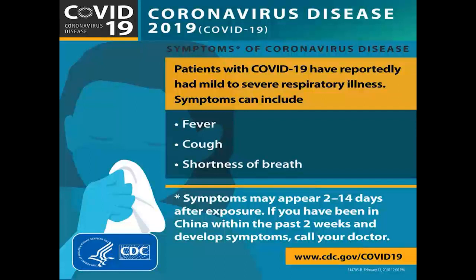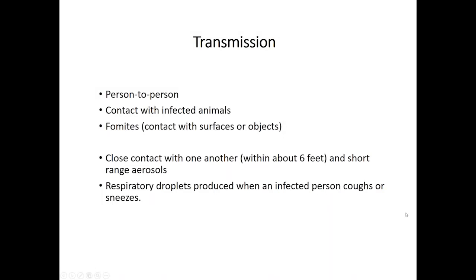The incubation period is generally 2–14 days, though some individuals have presented with symptoms outside that range. It is transmitted three ways: person to person through direct contact; contact with infected animals — which we don't really see in this country; and contact with fomites, which you see a lot in healthcare — contaminated surfaces, objects, or equipment. Person-to-person transmission is based on the six-foot distance and the range of droplet and aerosol spray.